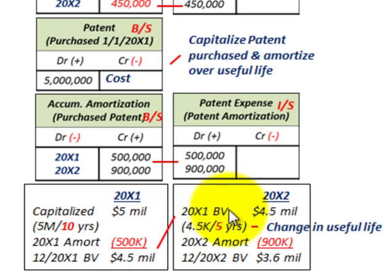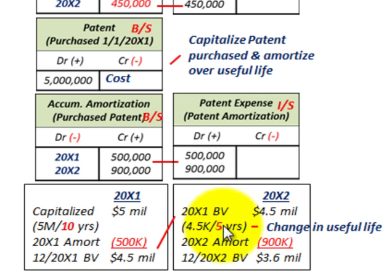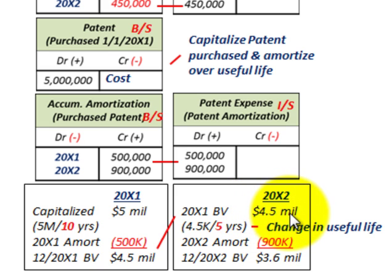For 20x2, we take that $4.5 million book value from the end of 20x1 as our starting amount. We have a change in useful life to 5 years, so we recalculate: $4.5 million divided by 5 years gives us amortization for 20x2 of $900,000. At the end of December 20x2, the carrying value is $4.5 million minus $900,000 amortization expense, ending at a book value of $3.6 million for this patent.